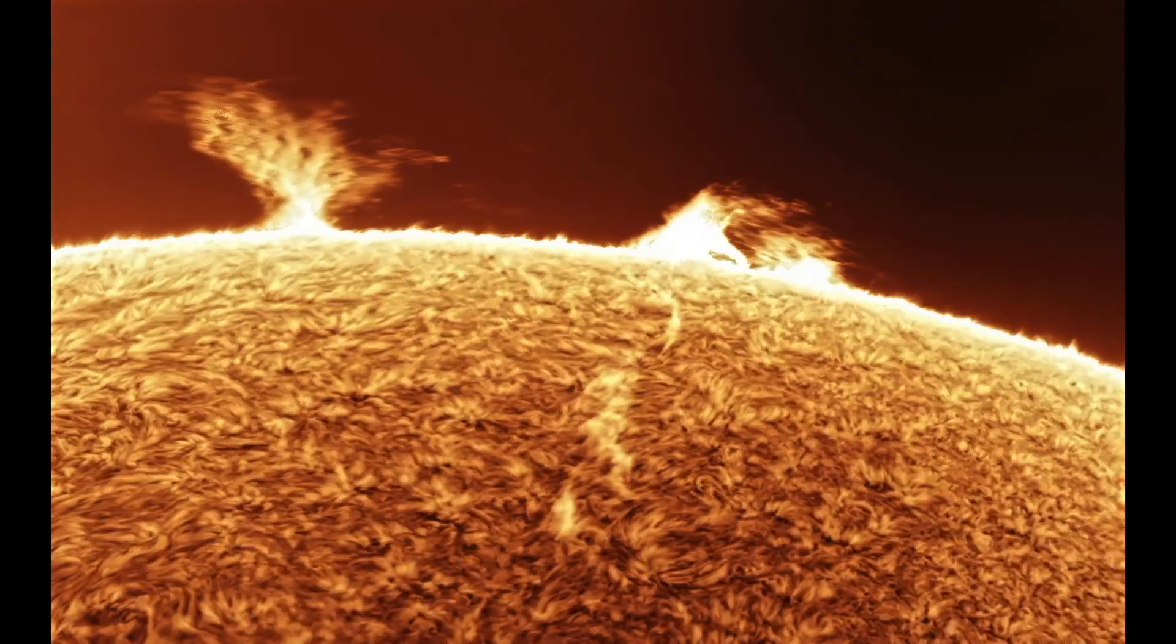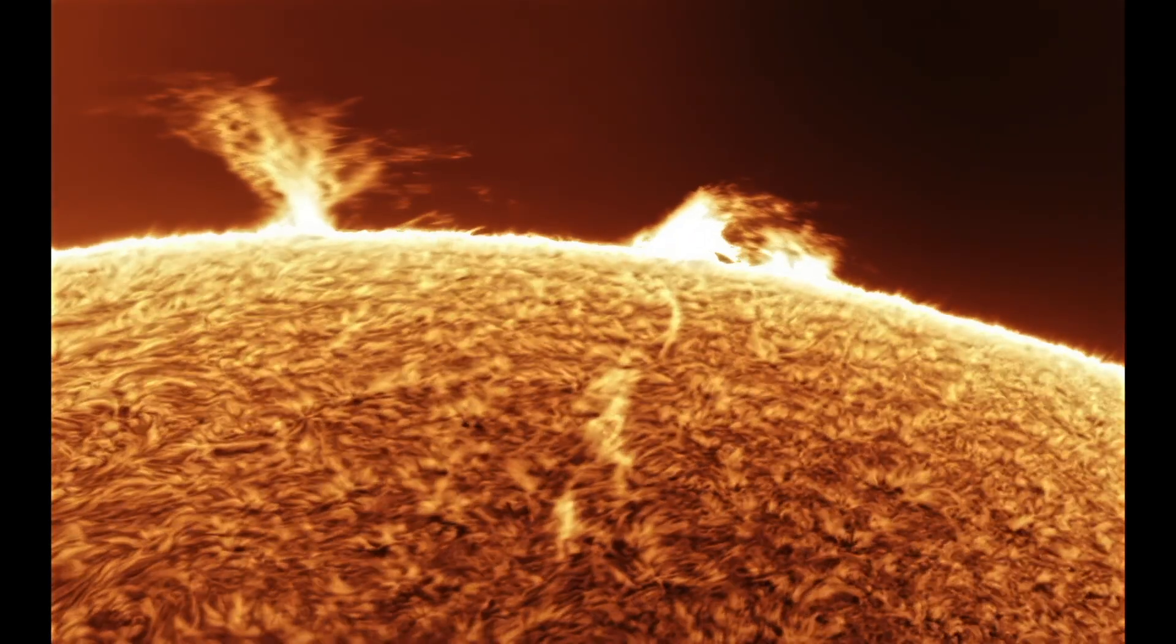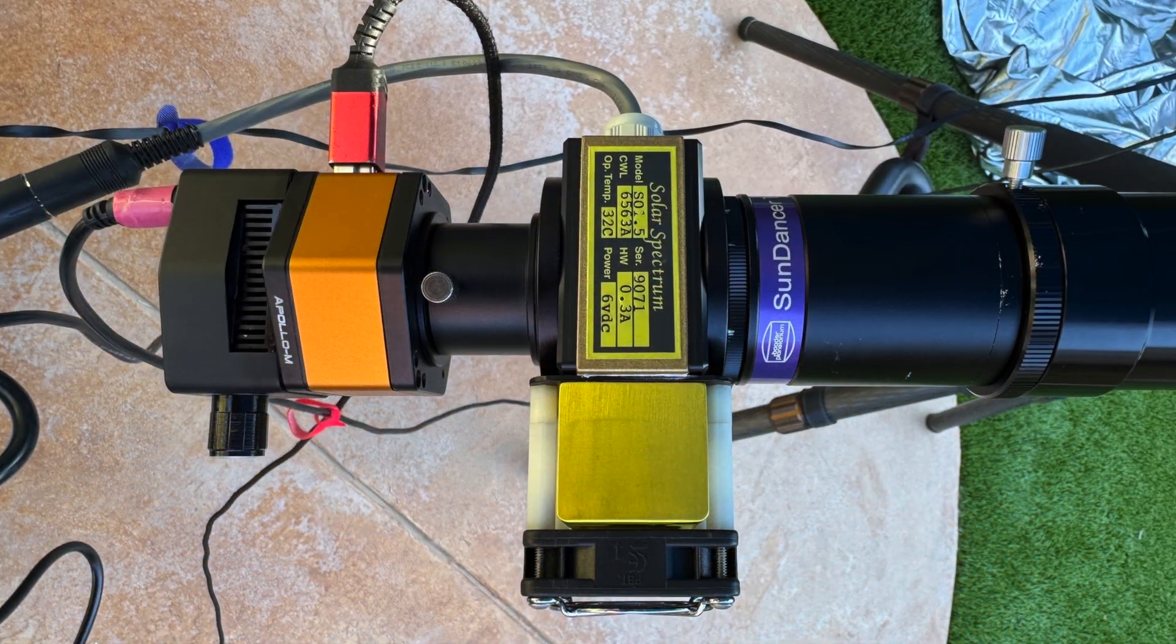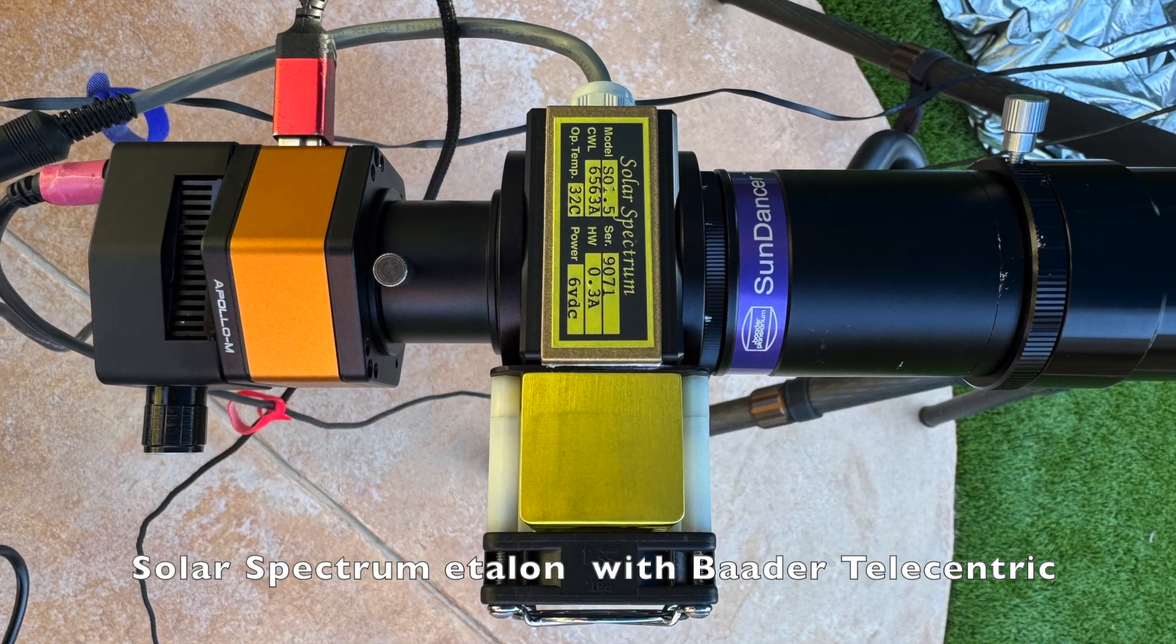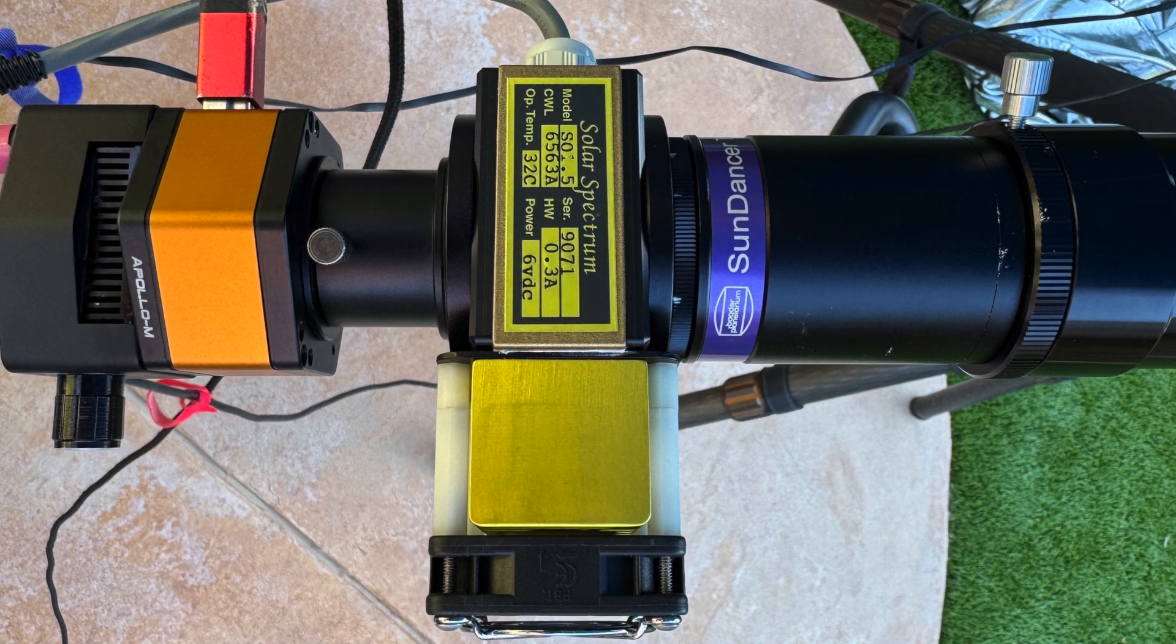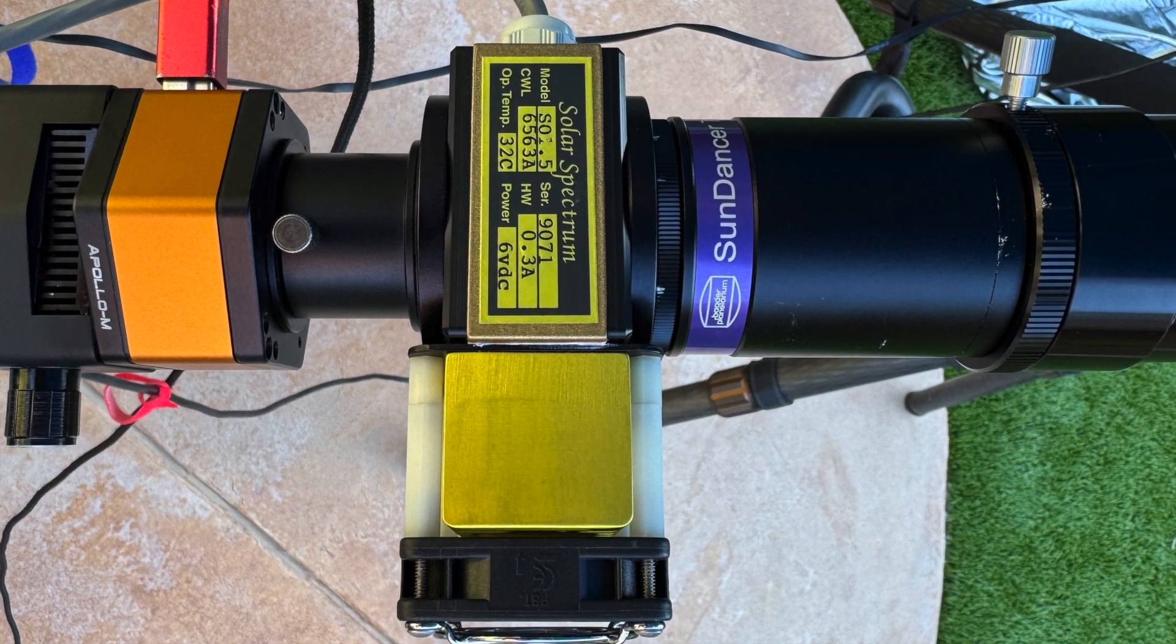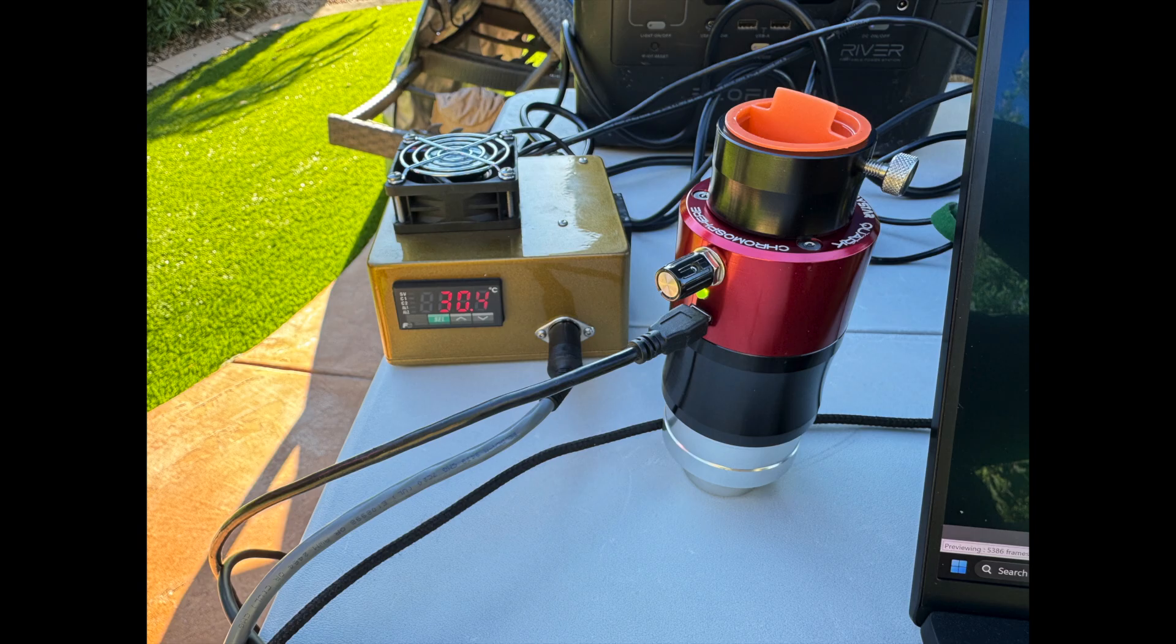My particular Quark is a good one and I've taken some outstanding photos with it. The Solar Spectrum etalon is engineered for stability, precision, and uniformity. It produces brighter and sharper images despite having a narrower bandpass. It's more expensive and requires additional hardware, but the performance difference is significant and consistent. It's what I use now for high-resolution solar imaging.